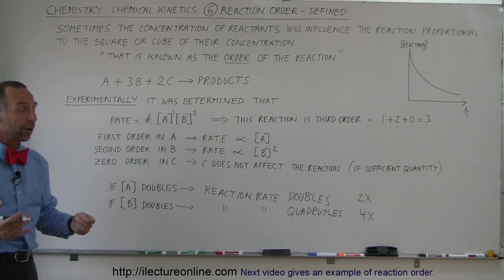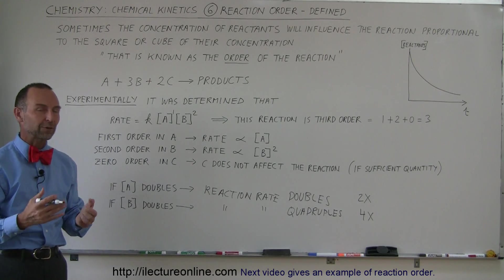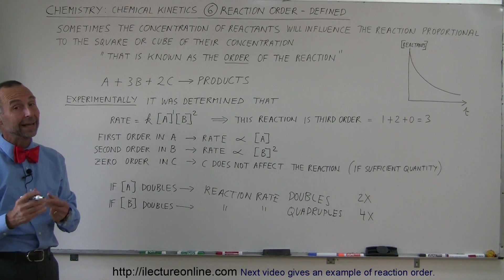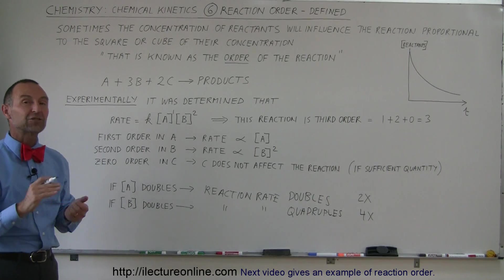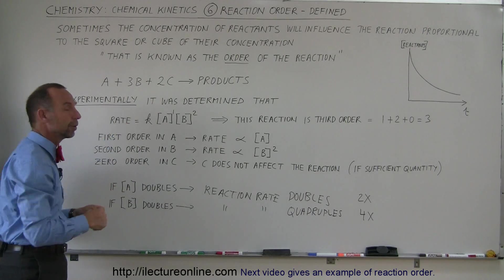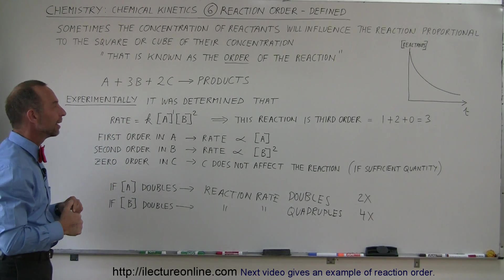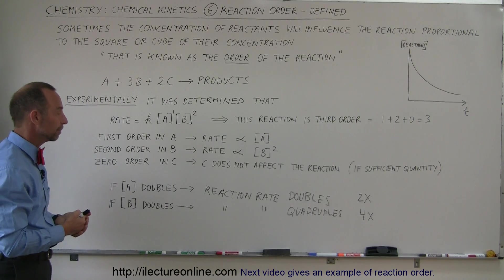So if concentration of A doubles the reaction is twice as fast. If the concentration of B doubles then the reaction will be four times as fast. So that's what we mean by the order, and yes we have to figure out what those orders are experimentally. You cannot simply look at the equation and say oh I know what the order is. You have to actually figure it out experimentally because there's too many variables that control that factor.